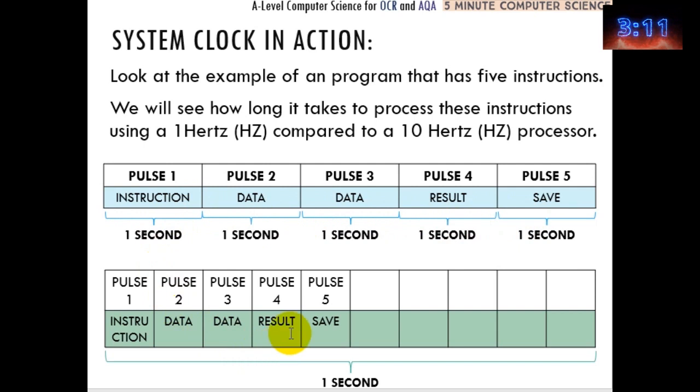However, if you've got a 10 hertz processor, a 10 hertz processor actually produces 10 pulses in one second. So it would only take half a second for five pulses to occur and the instructions and the data to have been executed. So you can see the difference is significant. A one hertz processor will take five seconds, whereas a 10 hertz processor will take half a second. Really, we're talking about millions and billions, so this would take absolutely less than a blink of an eye.